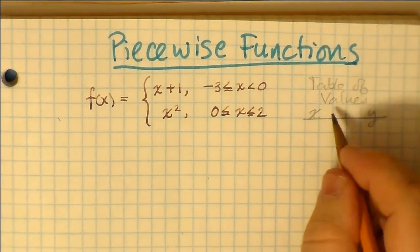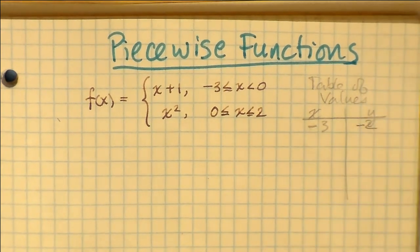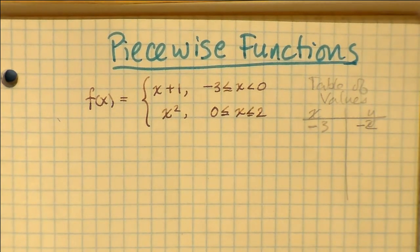And the other part, the other piece of the piecewise function, is x squared, defined on its subdomain 0 to 2, including both endpoints.